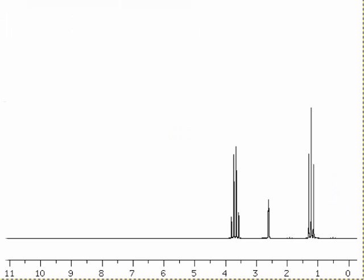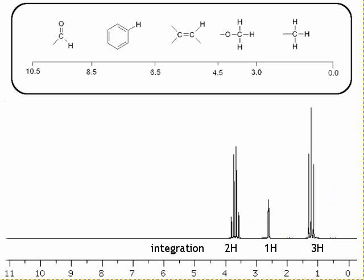This is the spectrum we're going to analyse. There are three peaks, so three different hydrogen environments. Integration shows that they correspond to two, one, and three hydrogens respectively. Looking at the regions, we can see that two are within the alkyl region, and one is in the alkyl region but next to oxygen.